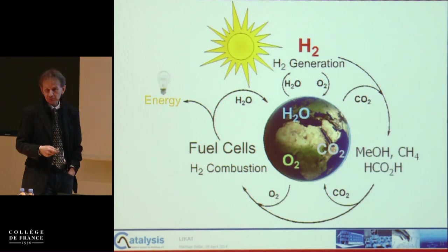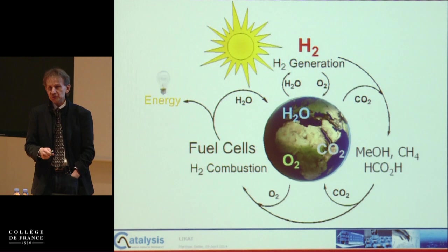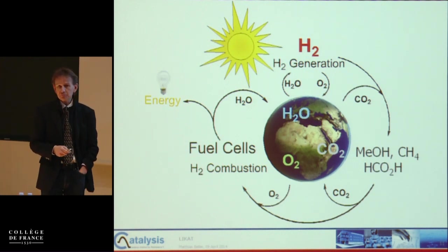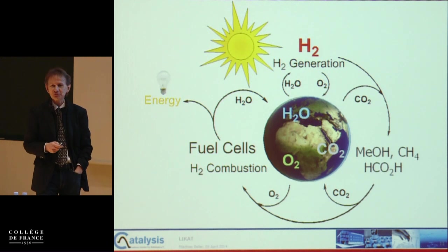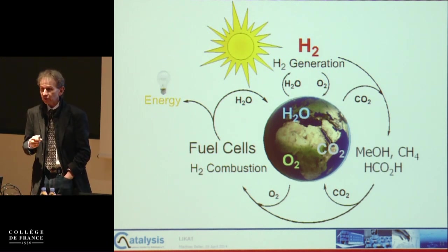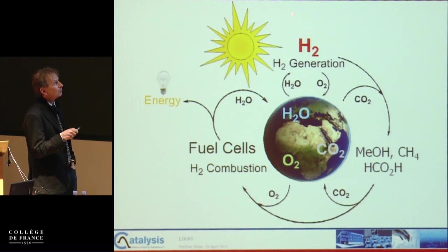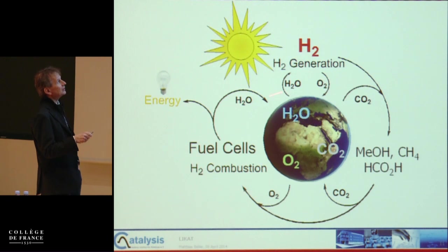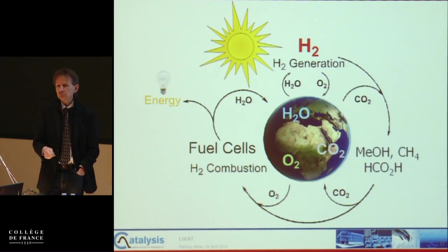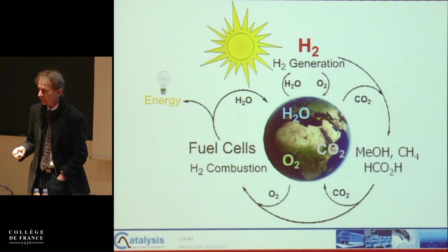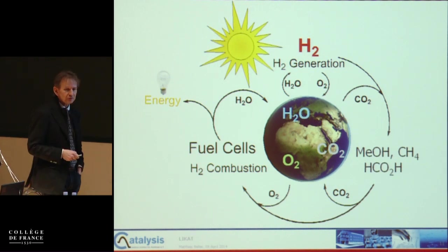We have to change energy technologies on one hand if we want to really reduce carbon dioxide increase. On the other hand, we can use carbon dioxide for chemical production, inspired by nature, to create a truly sustainable chemical industry. In the long term, we have to find ways to convert renewable energy — all relating to the sun, hydropower, wind, any type of renewable energy — into storable energy.